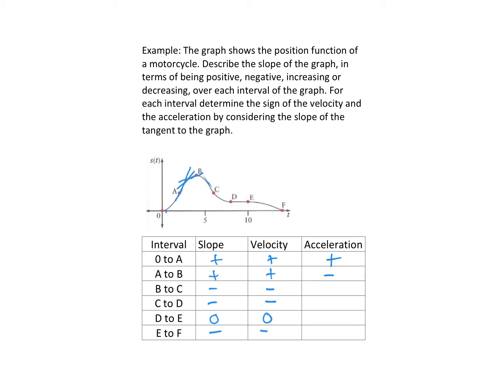From B to C the acceleration is also negative because it's getting more negative — if that was negative 2 it would be negative 4, negative 6, and so on, getting more negative as I go from B to C. Then as I go from C to D it's getting more positive — think of it as maybe negative 2, negative 1, and 0, so it gets more positive. D to E is still 0. And then E to F it's getting more negative as it gets steeper downward.